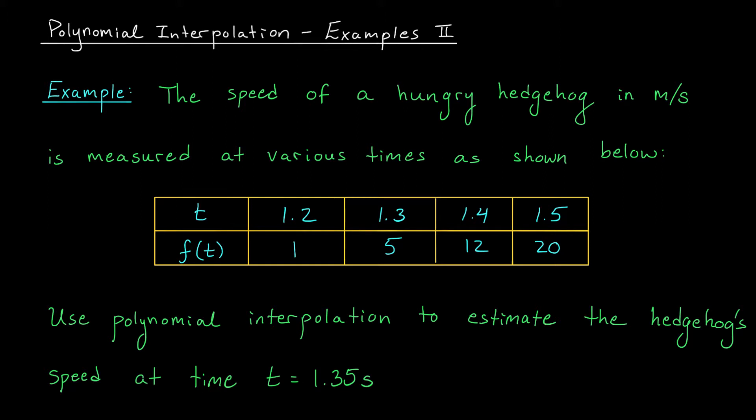Well, maybe we could find a polynomial curve that passes through these four points. In this case, since we have four points, that would be a cubic polynomial, right? We could use the Newton interpolating polynomial formula.